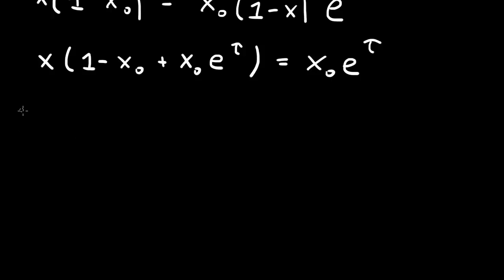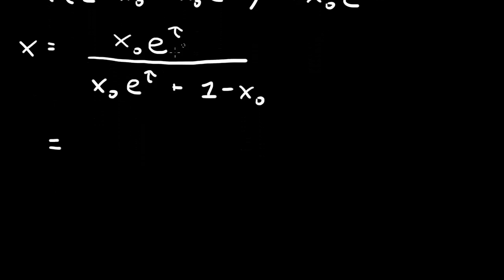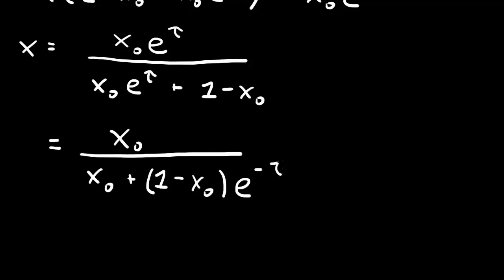We can solve this for x. So x then is equal to x₀ e to the τ over x₀ e to the τ plus (1 minus x₀). The last simplification we can do is to multiply the numerator and the denominator by e to the minus τ. So we can write this as x₀ over x₀ plus (1 minus x₀) times e to the minus τ.